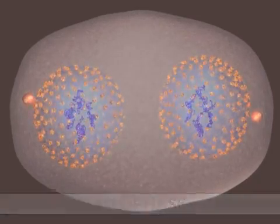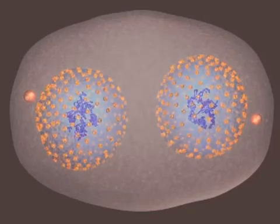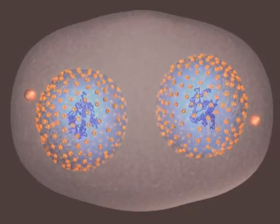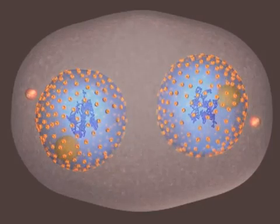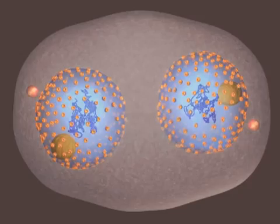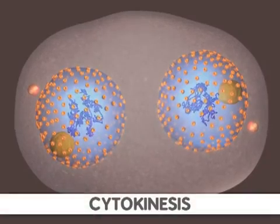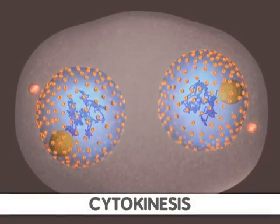Mitosis is now complete. The formation of two cells is all that remains. Following mitosis, the cell undergoes a process called cytokinesis.